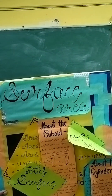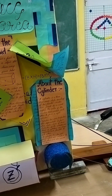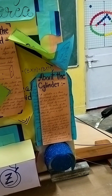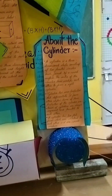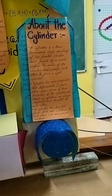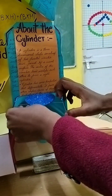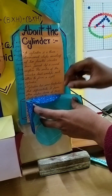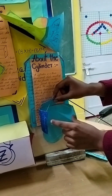A cylinder has two flat faces which are identical to each other and one curved surface. Now let us find the surface area of the cylinder. With the help of this net diagram, we find the area of each face. When we open this net diagram, the two circular bases and the curved surface area is equal to a rectangular base.